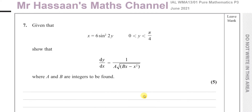Here we have a question about trig and differentiation, some sort of identities all mixed up. They told us that given x equals 6 sine squared 2y, and y is between zero and pi over four, show that dy/dx equals 1 over a times the square root of bx minus x squared, where a and b are integers to be found.